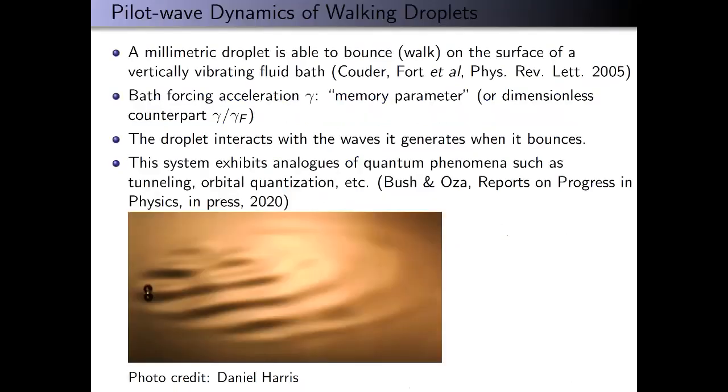I'll start by describing the problem. We have a fluid bath being vertically vibrated with forcing acceleration gamma, and because of this forcing a small droplet can bounce or walk on the surface of the fluid without coalescing. We're considering a regime of gamma below the Faraday instability threshold gamma_f, so that unless the surface is perturbed, it remains flat.